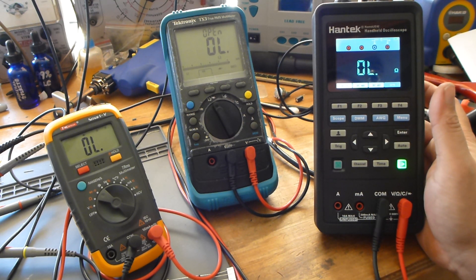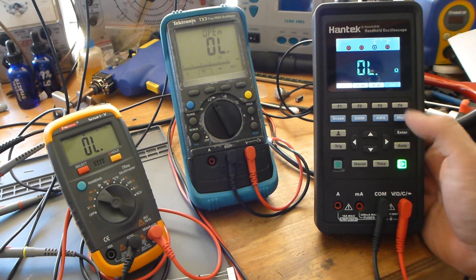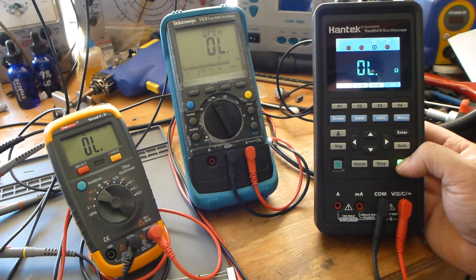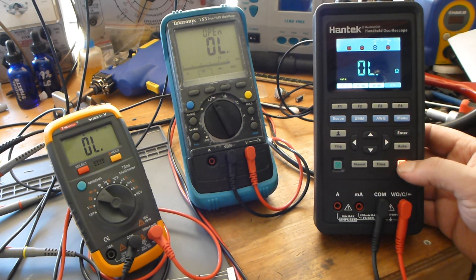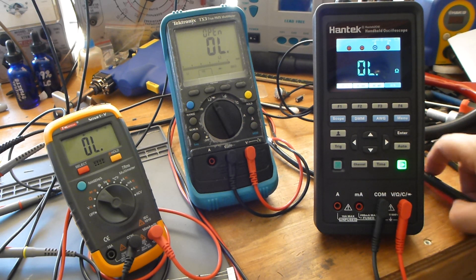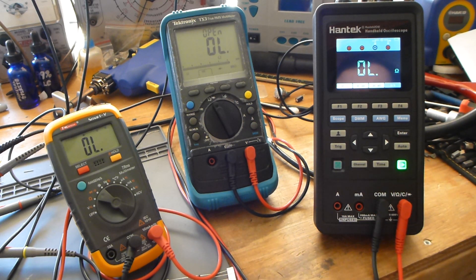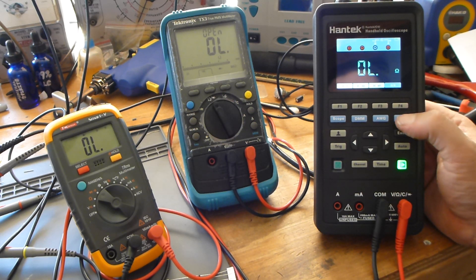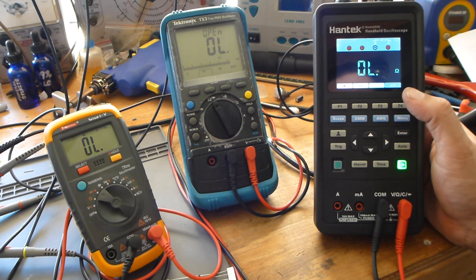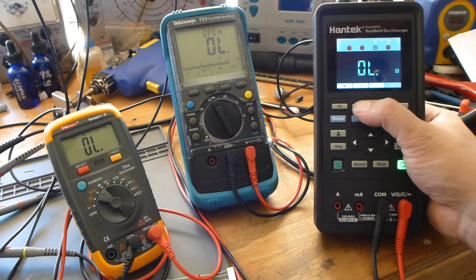When it comes to the hold function, which is the roll button right here, you can see it pops up right there in the corner of the screen. And then you can make it go away. So, let's just say we were measuring... What do we want to measure? Quickly.